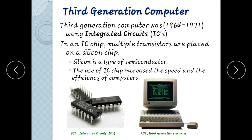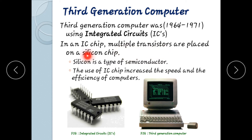The third generation computer spans 1964 to 1971. Transistors were replaced by integrated circuits, known as ICs. An IC contains multiple transistors on a silicon chip processed together.